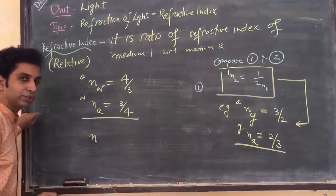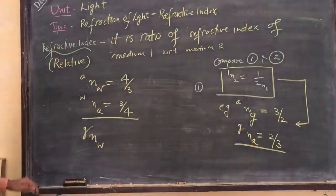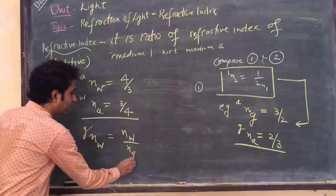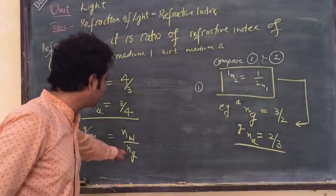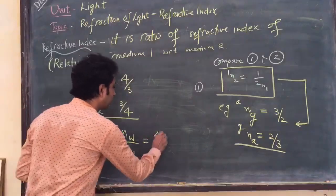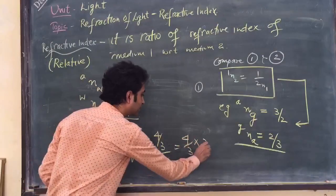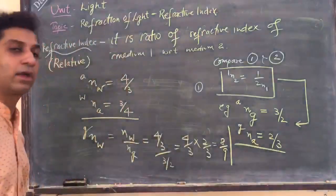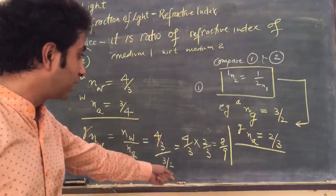You can also represent water with respect to glass. This is calculated as the refractive index of water divided by the refractive index of glass — that is n_water divided by n_glass — where both values are taken with respect to air. Substituting water as 4/3 and glass as 3/2 and applying the mathematics, this comes out to be 8/9.